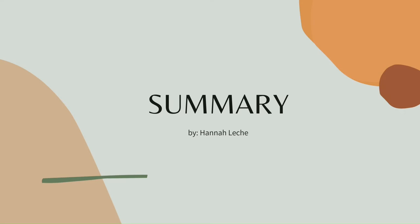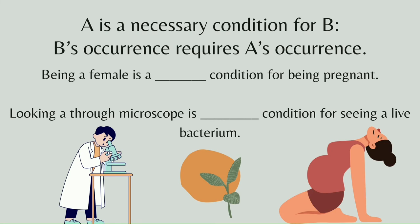Let's summarize. When A is a necessary condition for B, we are saying that B could not have come about if it were not for A — you must have A in order to get B. However, just because A is necessary for B does not mean that if you have A, you must have B. Being a female is a necessary condition for being pregnant — if you are pregnant, then you are female. That is true, so it is necessary.